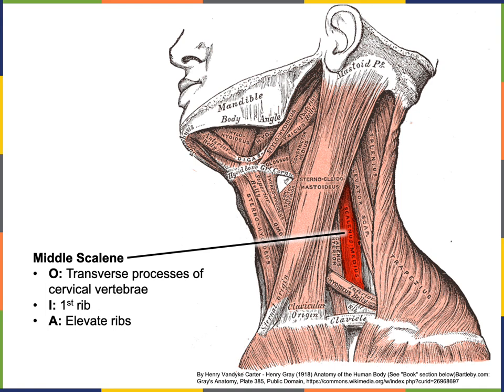The middle scalene has its origin from the transverse processes of the cervical vertebrae and its insertion into the first rib, giving it the action of elevating the ribs. This action helps with breathing by assisting in expanding the thoracic cavity to draw air into the lungs during inspiration.